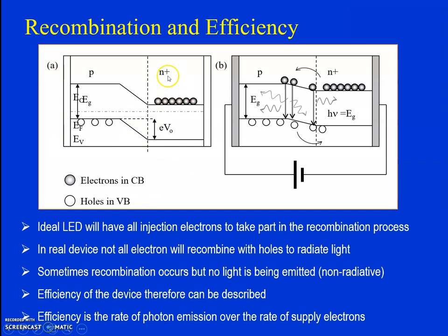Looking at this diagram: I am taking the n-type material and the p-type material. Holes are the majority charge carriers in p-type, and electrons are the majority charge carriers in n-type. When you apply the forward bias voltage, holes and electrons are injected into the opposite regions — p-type and n-type — and they recombine, releasing energy in the form of light.